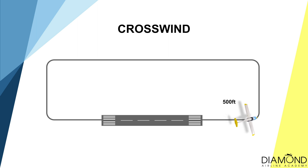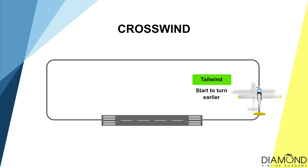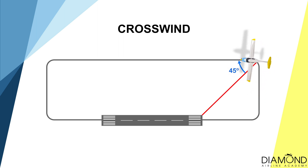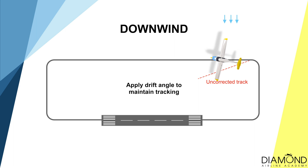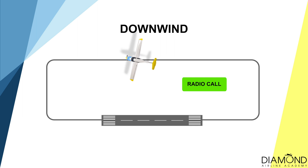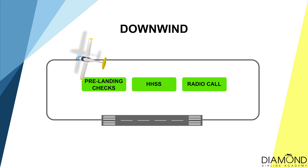Upon reaching 500 feet, we can start to turn onto the crosswind. Depending on the wind direction, we may have to adjust the turning point on the downwind. If there is more headwind, extend the crosswind leg for a couple more seconds. Whereas if there is a tailwind, turn earlier onto the downwind. We want to be at 45 degrees to the runway threshold at the start of downwind. After established on downwind, to maintain a downwind track parallel to the runway, we have to apply drift according to the wind direction and wind strength. The downwind radio call, the HHSS checks, and the pre-landing checks are the same as a normal circuit, except that we are applying drift as we are doing it.